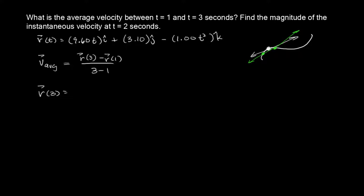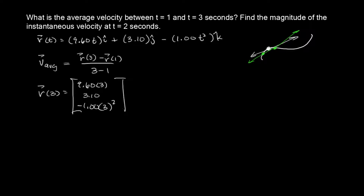R of three — I'm going to write it as a column vector. You just plug in three. So for 9.6t, that gives 28.8. There's nothing to plug into the middle component, so it stays 3.10. And the last component is negative 1 times three squared, which is negative 1.00 times nine — so negative nine. That's my first vector: (28.8, 3.10, -9).